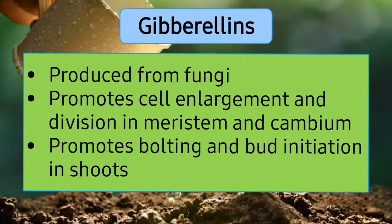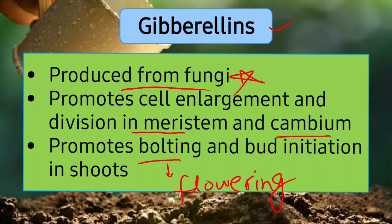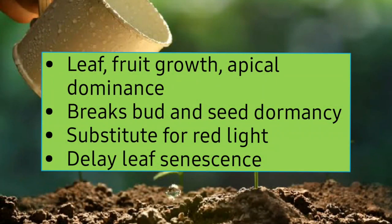The next hormone is gibberellin, which is also a growth stimulator. It is produced from the cultures of fungi. It promotes cell enlargement and division in meristem and cambium — similar to auxins. Meristem is the fast-growing region of the stem. Gibberellins promote bolting — the flowering process that happens after fruit production in mature plants. They also assist in bud initiation in shoots, and help in apical dominance as well as leaf and fruit growth.